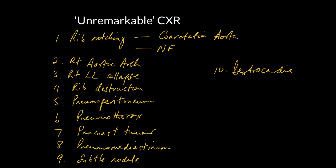As a summary, the unremarkable chest X-ray could be truly unremarkable or could be disclosing subtle abnormalities including: rib notching, right aortic arch, right lower lobe collapse, rib or bone destruction, pneumoperitoneum, pneumothorax, a Pancoast tumour, pneumomediastinum, a subtle nodule, and dextrocardia. Recognising dextrocardia is important if you want to make a diagnosis of Kartagener's syndrome.